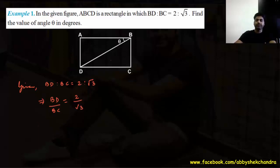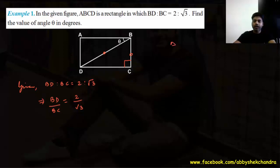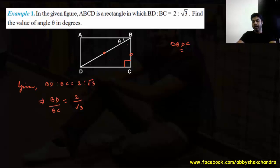BD is one side and BC is another side of the rectangle. Since ABCD is a rectangle, the angle at B is 90 degrees. BD and BC are part of triangle BDC. Since ABCD is a rectangle, AB is parallel to DC, with BD as a transversal, so angle ABD equals angle BDC equals theta — alternate angles.